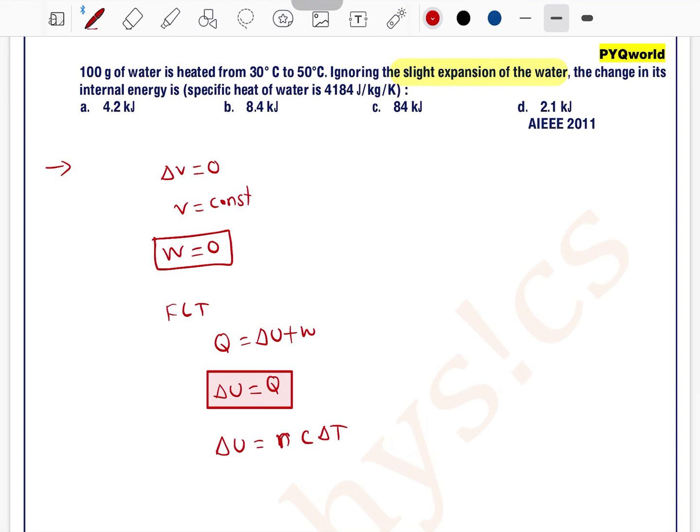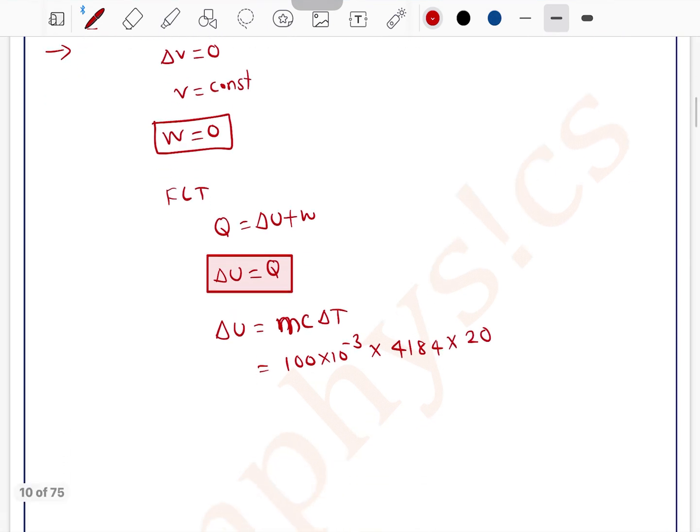The mass m is 100 × 10^-3 kilograms, specific heat capacity is 4184, and ΔT is 20 degrees Celsius.